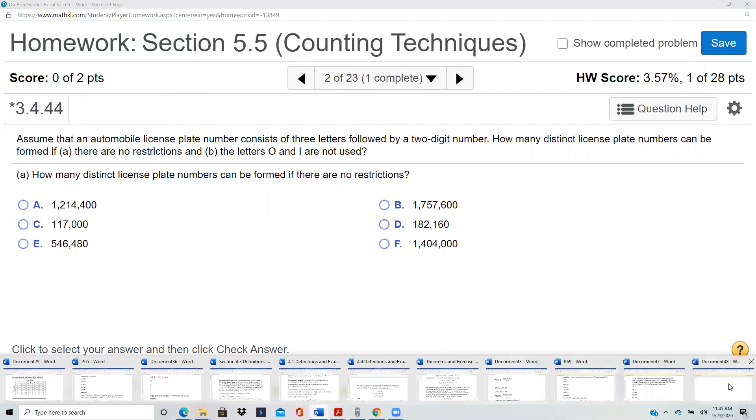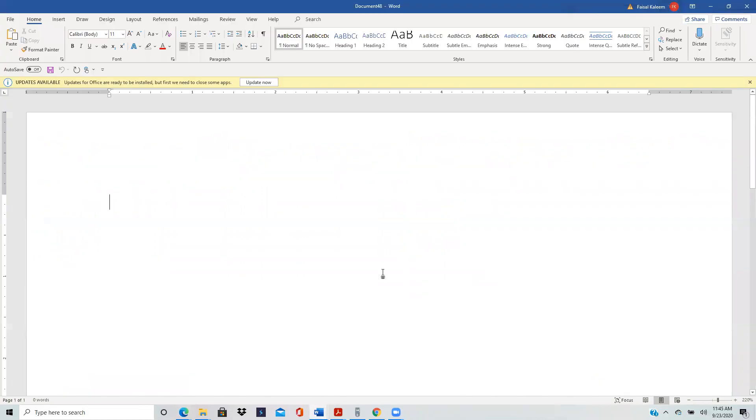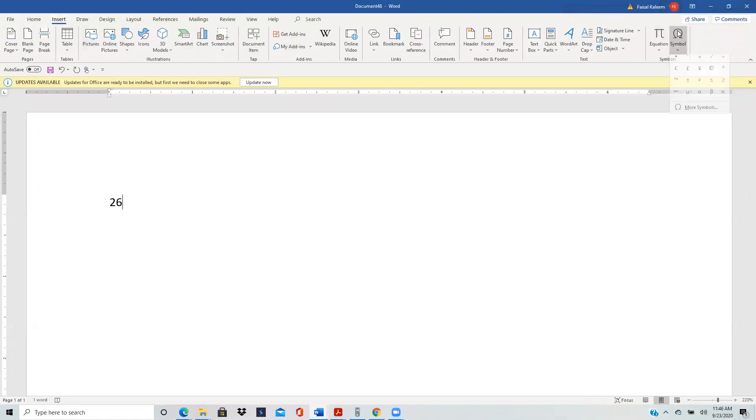So it would be like this: first is a letter and you have 26 choices for that, and then second is a letter, you have 26 choices for that, 26 for the second. Let's zoom in a bit.